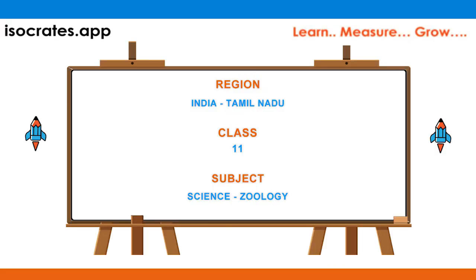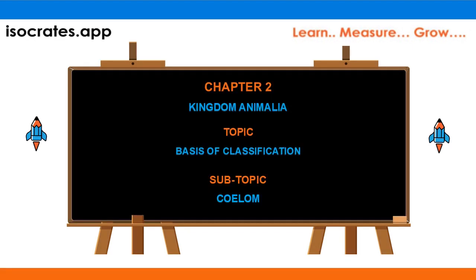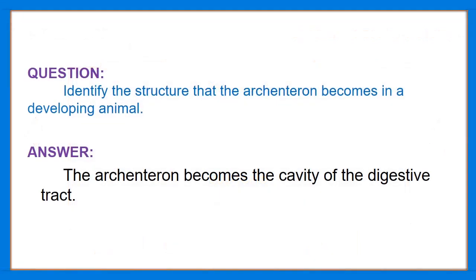Welcome to isocrates.app, a platform where you learn, measure and grow. In this video, we will show a quick and simple way to solve the question: identify the structure that the archenteron becomes in a developing animal.